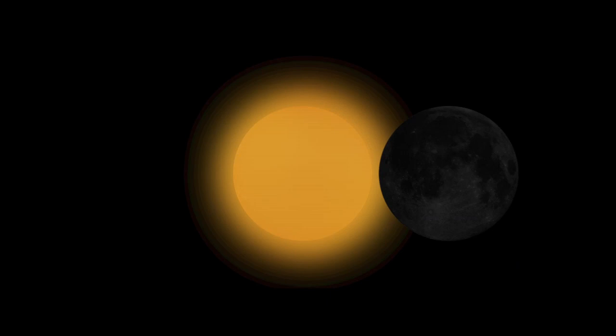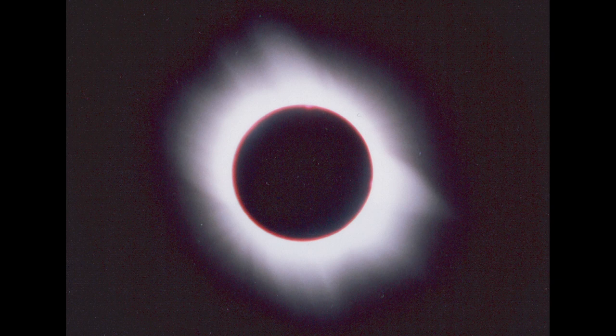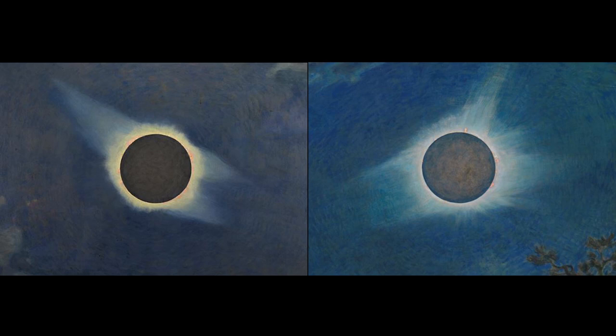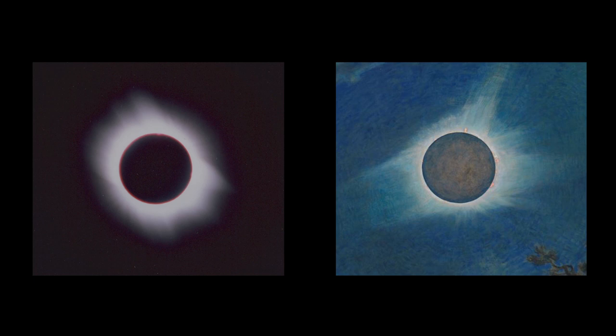The part of the sun's atmosphere that becomes visible during solar eclipses is the corona. A picture taken with a personal camera or smartphone will capture a globular corona as shown here. Howard Russell Butler's paintings capture the corona as seen by the naked eye. The goal of scientific investigation of the corona is to determine the spatial distribution of the white light brightness.